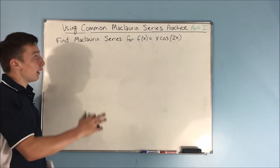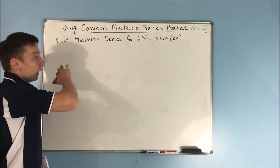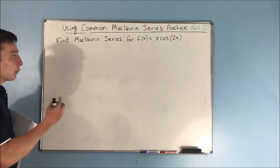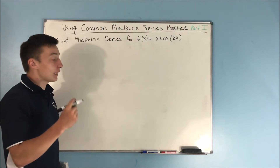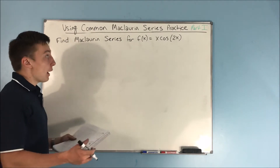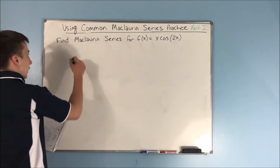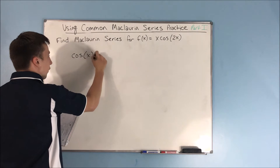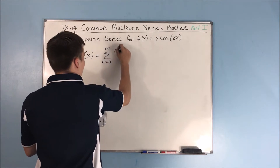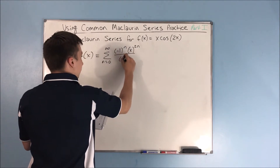This video is going to be part one of using common Maclaurin series to find a series representation for an uncommon function. We need to find the Maclaurin series for f(x) = x·cos(2x). Which of the common Maclaurin series matches this function the most? That's going to be cosine of x, and we know that is equal to the sum from n=0 to infinity of (-1)^n times x^(2n) over (2n)!.